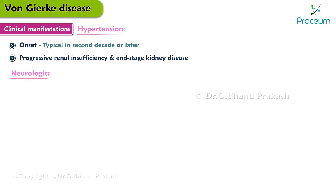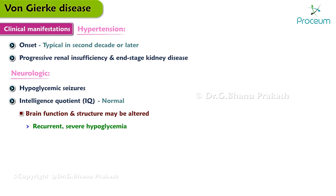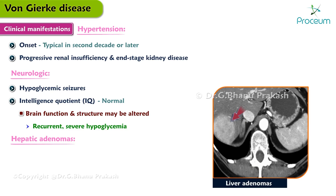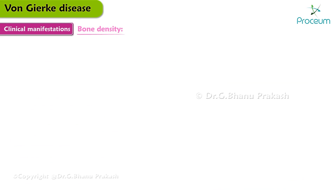Some neurologic manifestations are also present. Patients with GSD-1 are at risk for hypoglycemic seizures. The intelligence quotient or IQ is normal, but brain function and structure may be altered as a result of recurrent severe hypoglycemia. Most adults develop liver adenomas in the second to third decade of life. The adenomas may lead to intrahepatic hemorrhage and undergo malignant transformation in approximately 10% of cases.